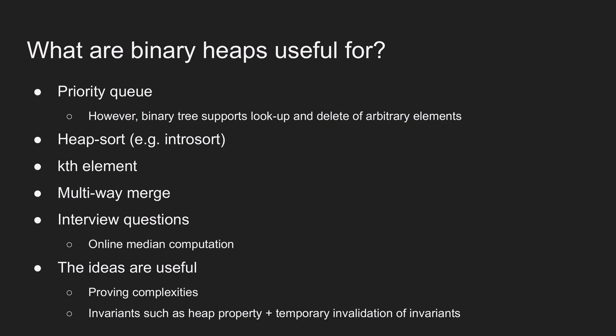What are binary heaps useful for? First, priority queues — useful for implementing Dijkstra's or any priority-first search. Another use is heap sort: insert everything into a heap, then repeatedly get and remove the minimum — this is used in introsort. We can also use it to find the kth smallest element or do a multi-way merge of sorted lists. It's used in interview questions too, like the online median computation using two heaps. Most of all, these ideas are useful as concepts themselves — the heap property as an invariant, temporarily breaking it and cleverly fixing it, is a broadly useful technique. Identifying invariants helps understand algorithms.